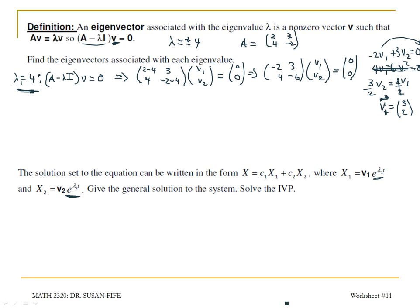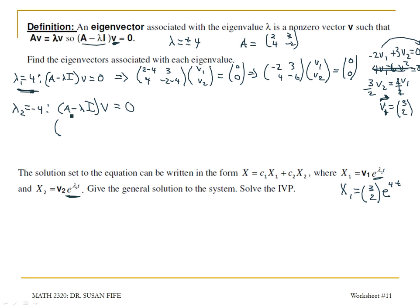That gives me my first solution: x1 equals the vector (3, 2) times e to the lambda 1 t, where lambda 1 is 4, so e to the 4t. For my second solution, I use the second eigenvalue, negative 4. Then A minus lambda I times v equals 0; subtracting negative 4 means adding 4 across the diagonal, giving 6, 3 for the first row and 4, 2 for the second row.